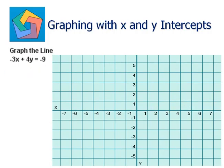Next problem: graph the line negative 3x plus 4y is equal to negative 9. For the x-intercept, we put y as 0. So negative 3x plus 0 equals negative 9, since 4 times 0 is 0. So negative 3x equals negative 9. Dividing both sides by negative 3, we get x equals 3. So the x-intercept becomes 3 comma 0.